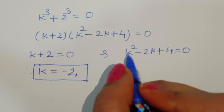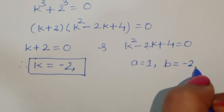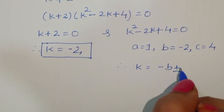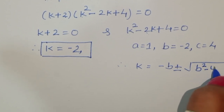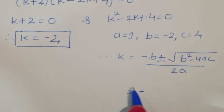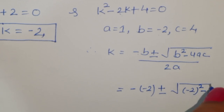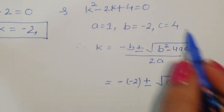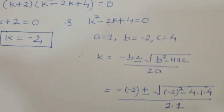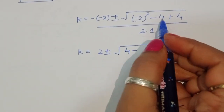For k^2 - 2k + 4 = 0, the coefficients are a = 1, b = -2, and c = 4. Using the quadratic formula, k = (-b ± √(b^2 - 4ac)) / (2a) = (2 ± √(4 - 16)) / 2 = (2 ± √(-12)) / 2.